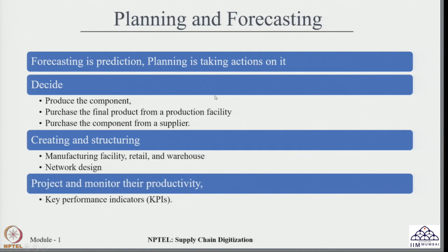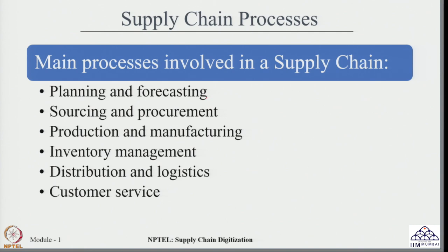When we look at the processes majorly involved in any supply chain, the list includes: planning and forecasting, sourcing and procurement, production and manufacturing, inventory management, distribution and logistics, and customer services.